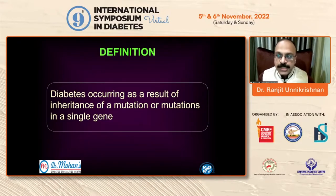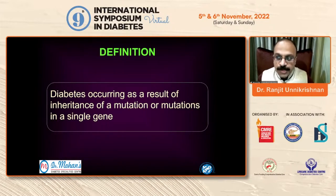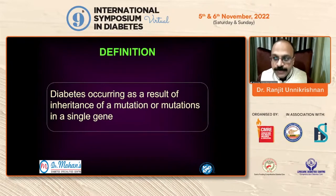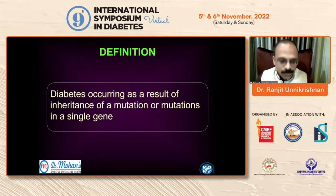Monogenic diabetes is different — if you have that particular mutation, you have that phenotype; if you don't carry that mutation, you don't have that phenotype. This is an excellent example of Mendelian inheritance: autosomal dominant, autosomal recessive, and so on.